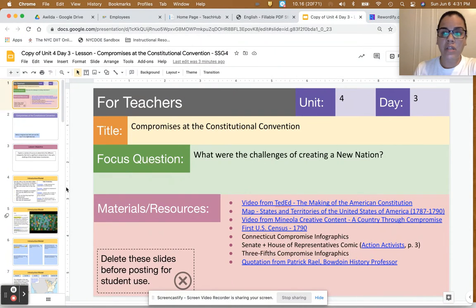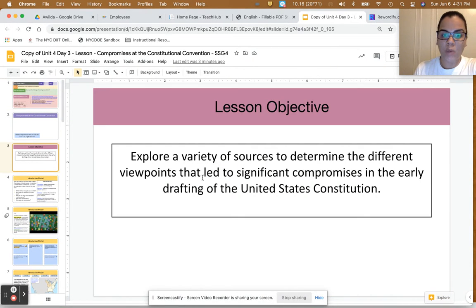This teacher-facing video focuses on the introduction portion of the grade 4 unit for day 3 lesson titled Compromises at the Constitutional Convention. The focus question is what were the challenges of creating a new nation, and our lesson objective is to explore a variety of sources to determine the different viewpoints that led to significant compromises in the early drafting of the United States Constitution.